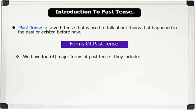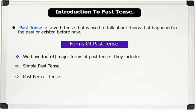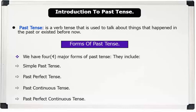The four forms include: 1. Simple past tense. 2. Past perfect tense. 3. Past continuous tense. 4. Past perfect continuous tense.